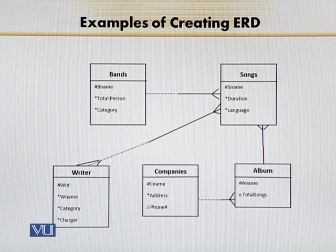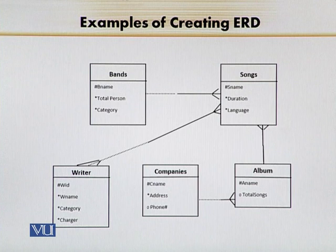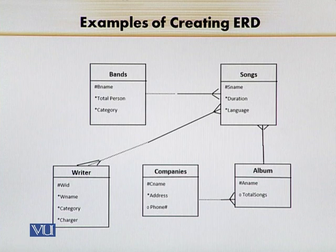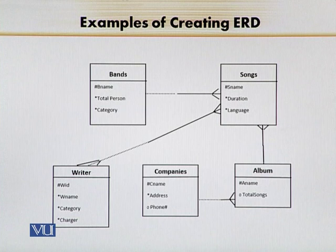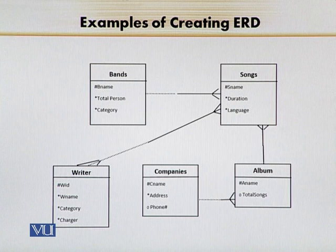Now on the screen, what you can see right now is my version of the ERD. I have basically created 5 entities: Band, Songs, Writer, Companies, and Album — the same five entities I showed you. For Band, I wrote the same attributes: B_Name, Total_Person, and Category. B_Name I have made a unique identifier — it can be converted into either a primary key or a unique key. Now picking one entity and exhaustively examining its relationship with every other entity: Band can have zero or more songs.